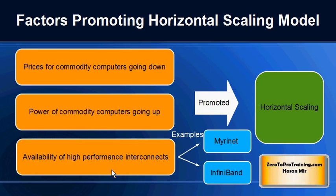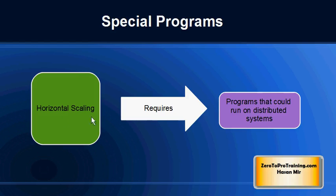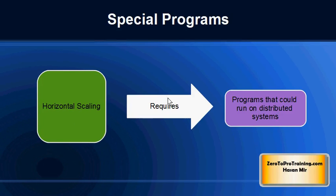The prices of commodity computers have been going down and their power has been going up. Also, high-performance interconnects are now available to connect computers together. Horizontal scaling works on a distributed systems model, where multiple computers are connected together. To take advantage of horizontal scaling, you need specialized programs designed to pass processing to multiple computers and store data across multiple computers.